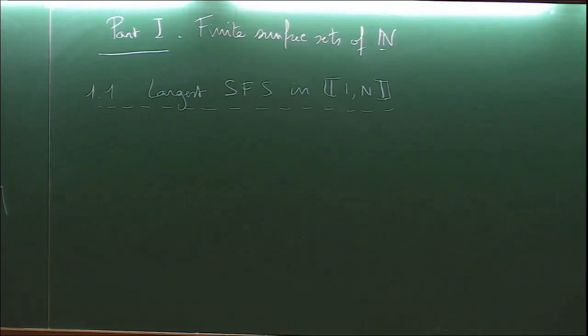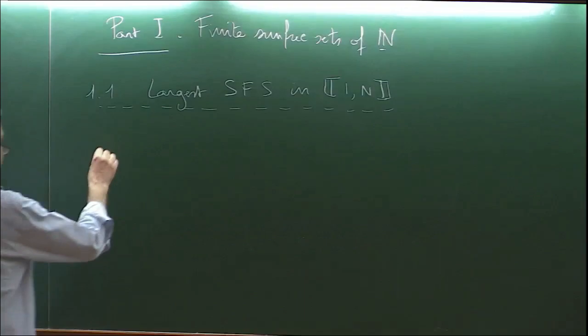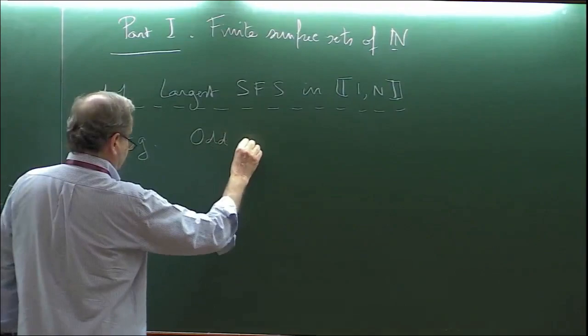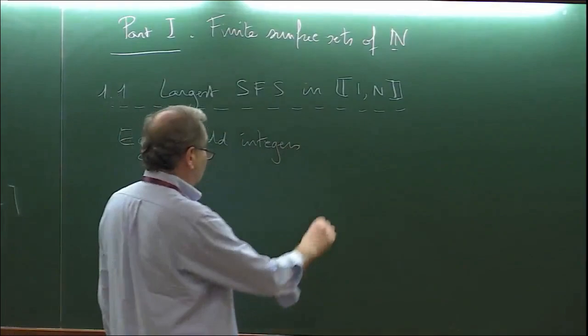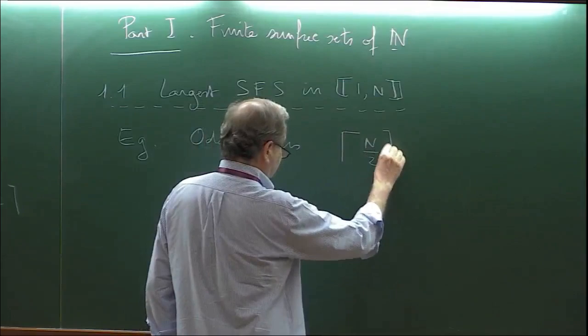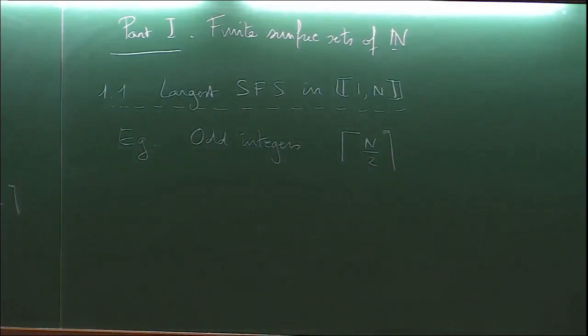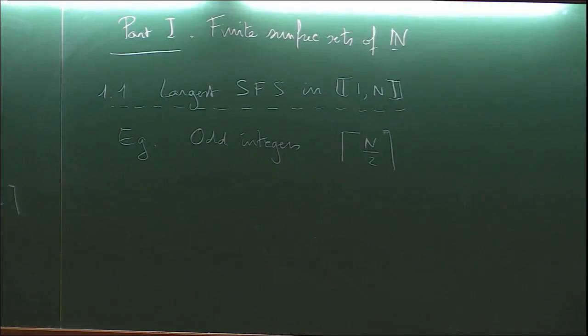Odd integers — good example. You'll see the number is exactly ⌈N/2⌉. Any subset of the odd integers also works: if you have a sum-free set, any subset is also a sum-free set.